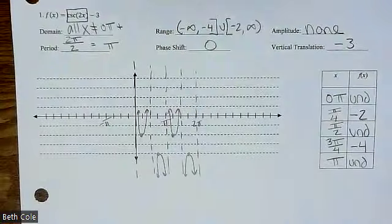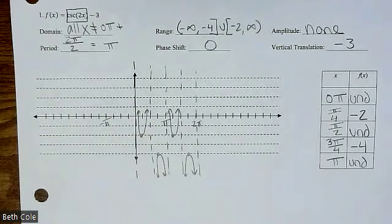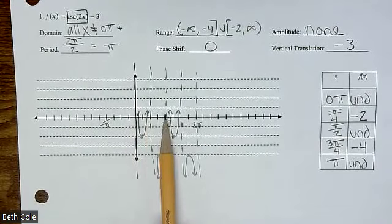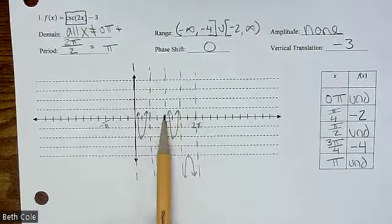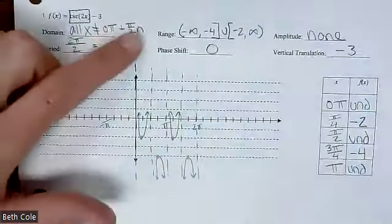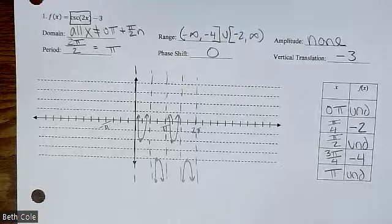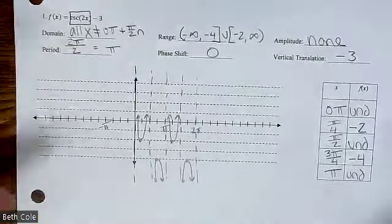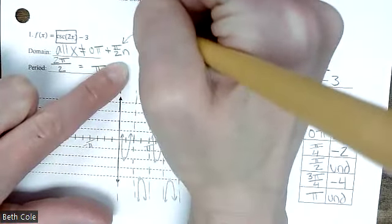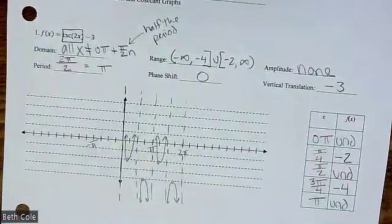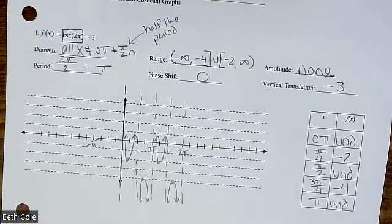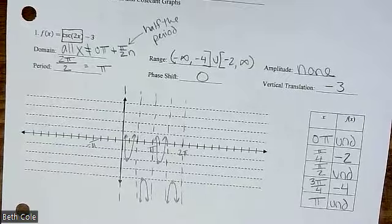The asymptotes are at zero, then pi over two, then pi, then three pi over two. So how often are they happening? Half a pi — so I would write pi over two N. If you want a method instead of just looking at it, that's going to be half the period. So it's the first one and then half the period times N.